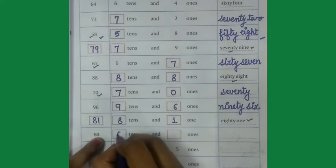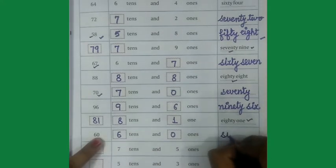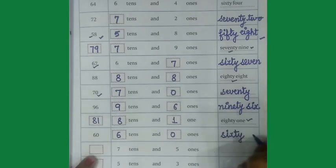Come on next one, 60 here, 6 tens, 0 ones. I will write the number name also, S-I-X-T-Y-60.